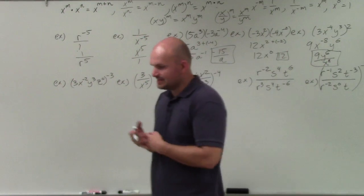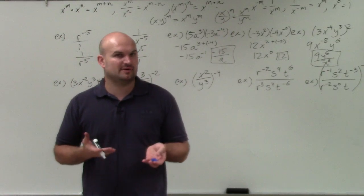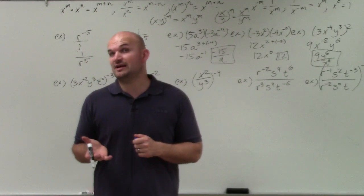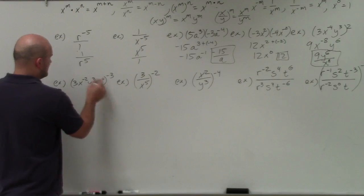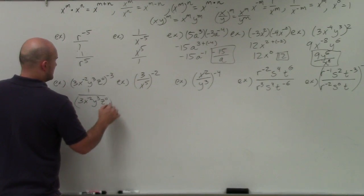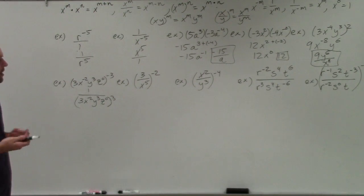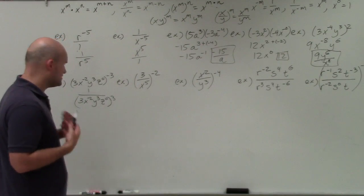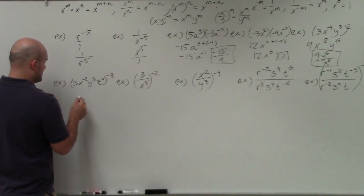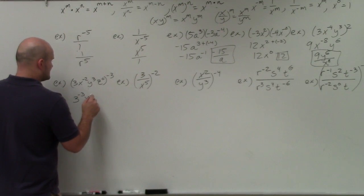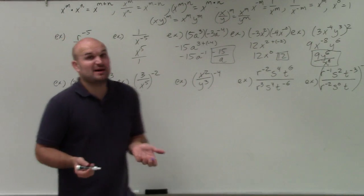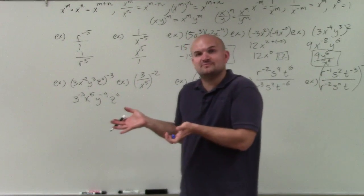Over here, we have a negative outer power. There are a couple of different ways to do this: you could apply it as a negative number and then simplify the result, or you could rewrite it as a positive power — so rewrite this as 1 over 3x to the negative 2nd, y cubed, z to the 0, and then raise that to the 3rd power. However, my preferred approach is to multiply through using the negative number, giving 3 to the negative 3rd, x to the positive 6, y to the negative 9th, and z to the 0.